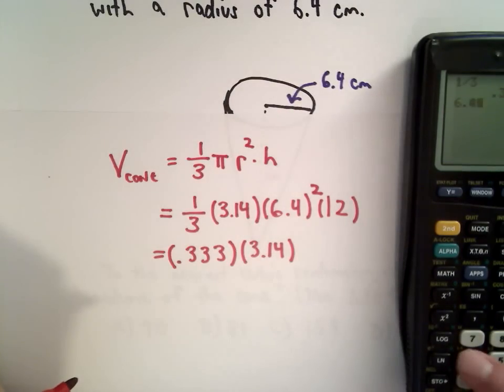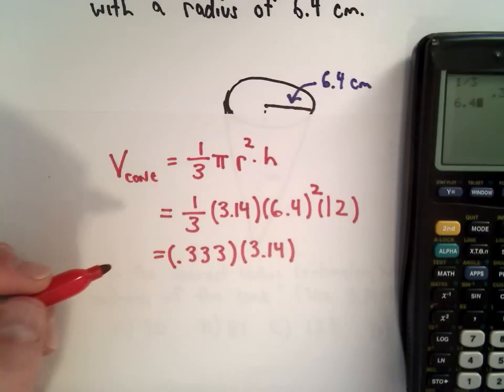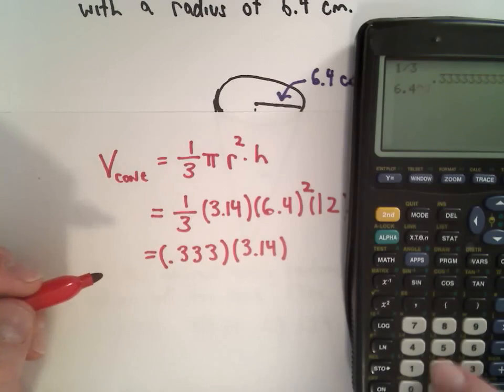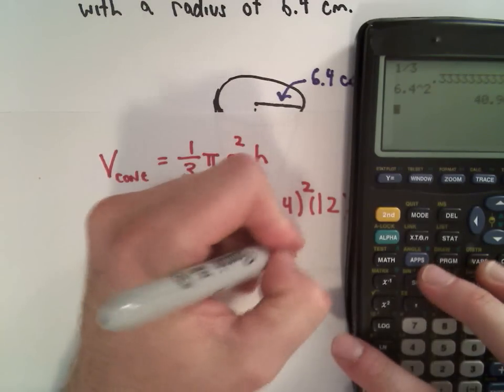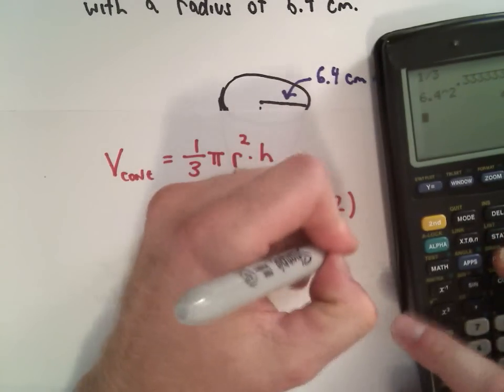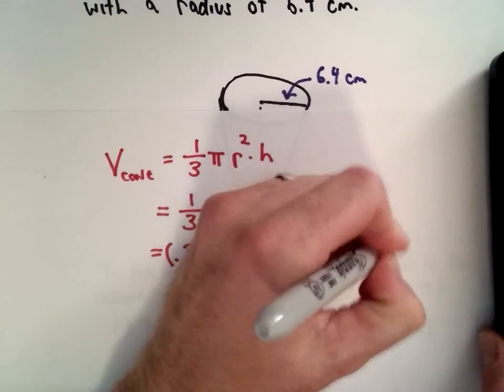We've got 3.14. I'm also going to do 6.4 squared, which is 6.4 multiplied by 6.4. So 6.4 squared, that's giving me 40.96. Again, multiplied by 12.